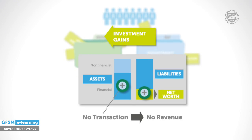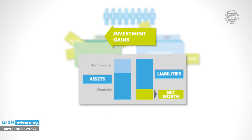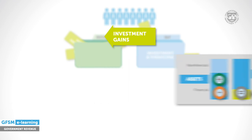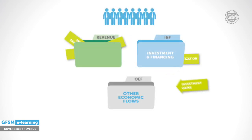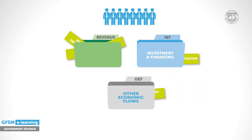Now, suppose the government sells these equity holdings and creates a cash inflow. Still no revenue is recorded because one asset is exchanged for another. However, the holding gain will be recorded elsewhere as an other economic flow.